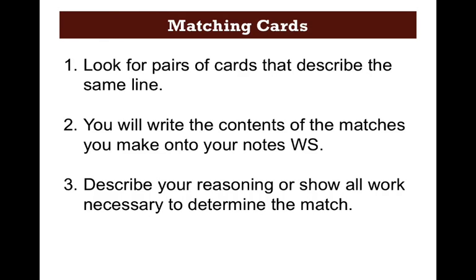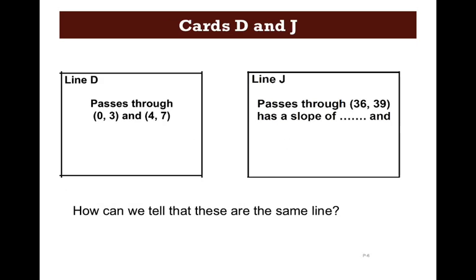Next up, and you'll see this at the bottom of your page, labeled Matching Cards Example. What you're going to be doing is you're going to be looking for pairs of cards that describe the same line. You're going to write the contents of the matches you make onto your notes worksheet. Then you're going to describe your reasoning, or show all your work. So what I want you to do is look at the example on your page. The example on your page has two cards, line D and line J. Line D passes through 0, 3, and 4, 7. Line J passes through 36 and 39 and has a slope of blank. How can we tell if these are the same line?